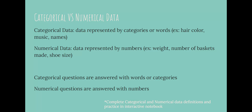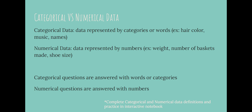Whereas numerical data is data that's represented by numbers. Numerical, number — they sound the same. So weight, number of baskets made, your shoe size — those are all things that would be numerical data.